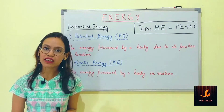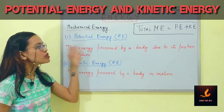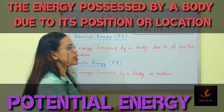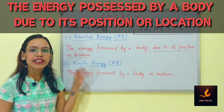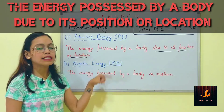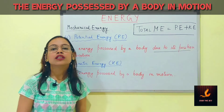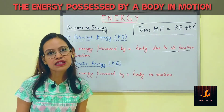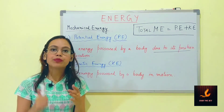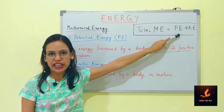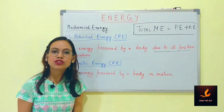The various forms of mechanical energy are potential energy and kinetic energy. Potential energy is the energy possessed by a body due to its position or location — where it's placed. The position of the body determines the amount of potential energy it possesses. Kinetic energy is the energy possessed by a moving body — a body that is in motion. To calculate the total mechanical energy possessed by a body, we add the total potential energy plus the total kinetic energy.